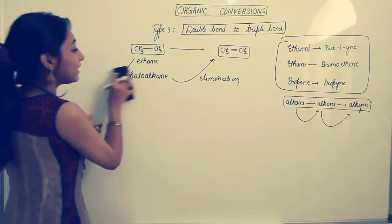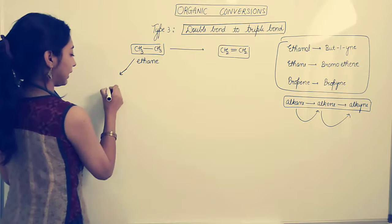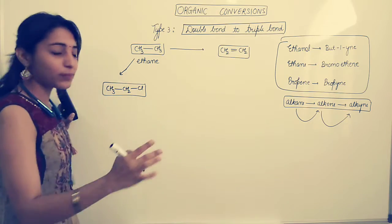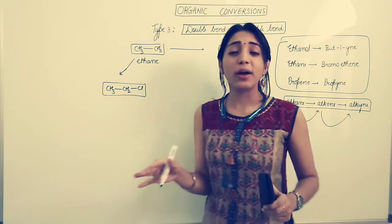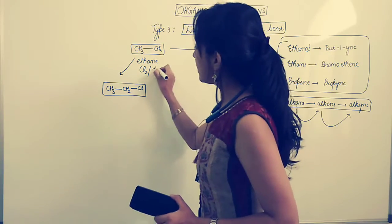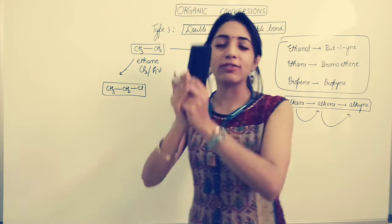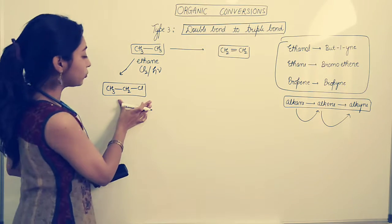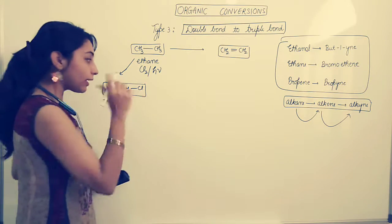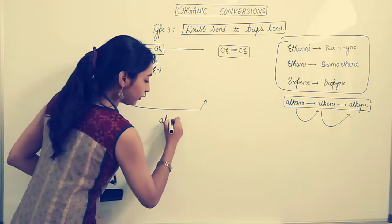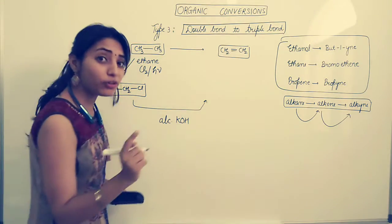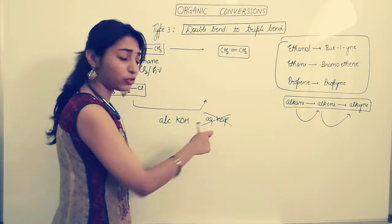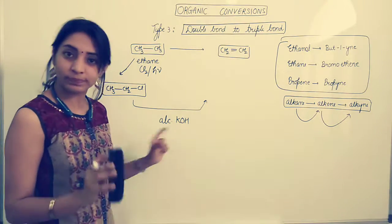So let's see how to convert the ethane into ethyl chloride. Let's say I want to convert it to CH3-CH2-Cl. And you have done this so many times. This is like Bhagwan for organic chemistry. Whenever you have any confusion, just put Cl2 in the presence of sunlight. Sunlight is like Sudarshan Chakra. It's the Bhagwan for organic chemistry.